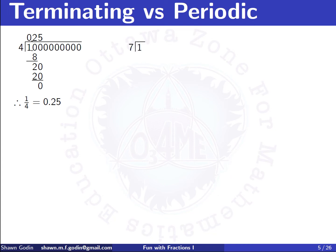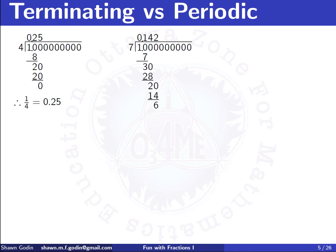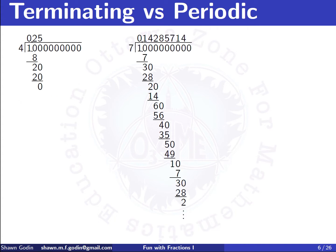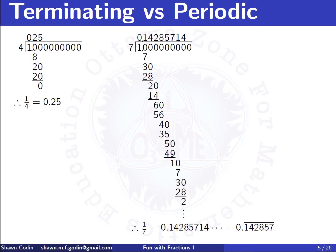Now let's look at the other extreme — one seventh, which we saw goes on a little bit longer. Seven goes into 10 one time, leaving a remainder of three. Bring down zero: seven goes into 30 four times, remainder two. Seven goes into 20 twice, then into 60 eight times, into 40 five times — and we just keep going. Eventually we'll see this thing starts to repeat. But is seeing it repeat enough to know that it's repeating? Let's take a closer look.